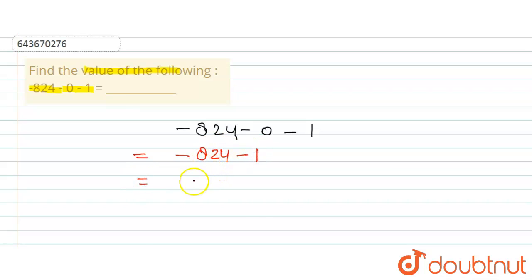Again we will apply this rule. That means here are two negative signs. Two negative signs means the resultant number will always be negative. And here addition will take place, that is 824 + 1.